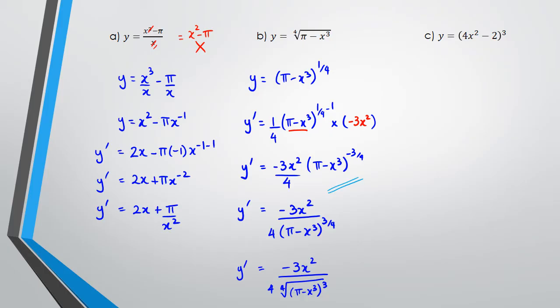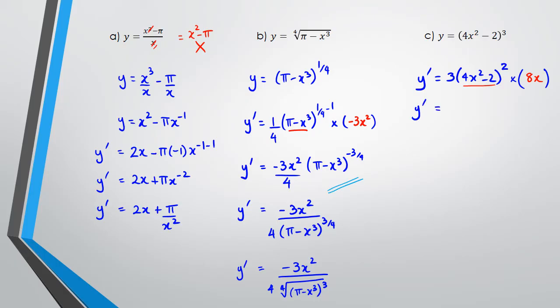For question (c), you could expand it if you want, but there's no reason to because you can use the chain rule. Using the chain rule, y dash equals three times (4x squared minus 2) to the power of two, multiplied by the differentiation of whatever's inside the bracket, which is 8x. You can rewrite this as 24x times (4x squared minus 2) to the power of two.